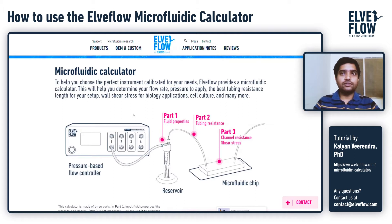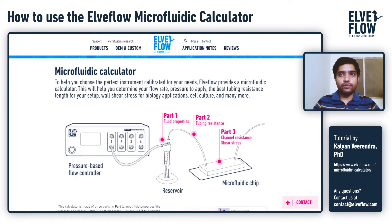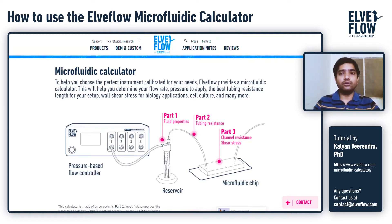Each microfluidic system is different, and differences in the overall system — like the specific design of the chip — will likely have an impact on the calculations performed using the tool. Also note that the calculator uses some approximations to perform the calculations, so the actual parameters will likely vary based on real-world experimental conditions. It is always good to recalculate each time you make adjustments to your parameters.